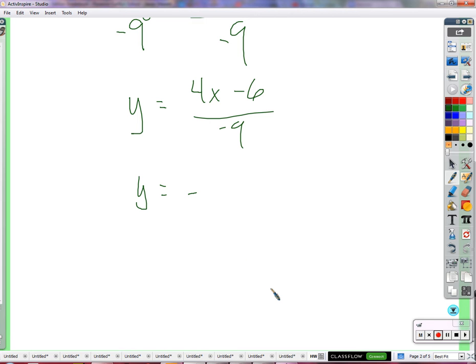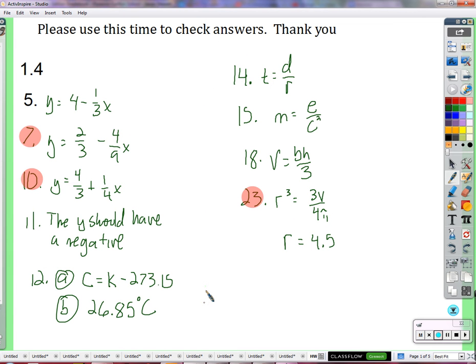John? Y equals negative 4 over 9 times x. Negative 6 divided by negative 9 is going to be positive. Positive what? 6 over 9. Can we simplify 6 over 9? 2 over 3. Let's take a look back here. Y equals negative 4/9 x plus 2/3.